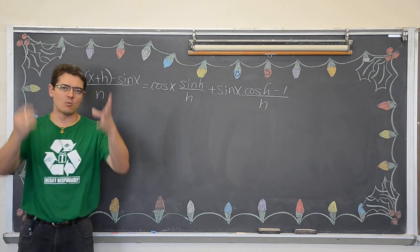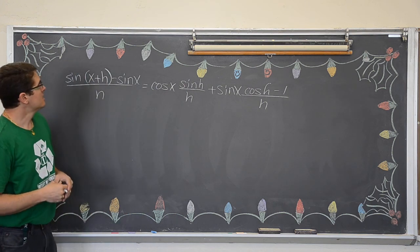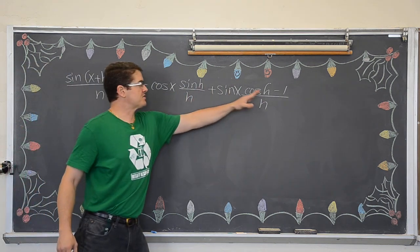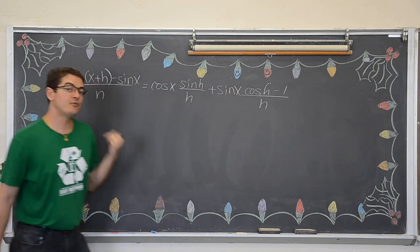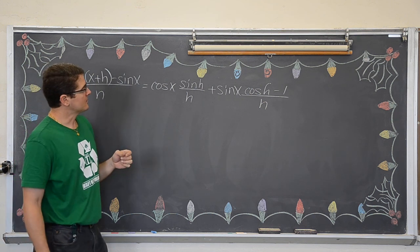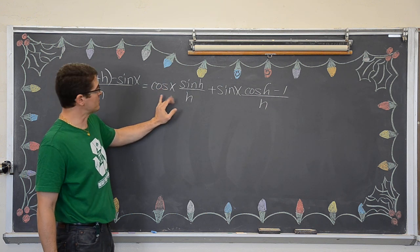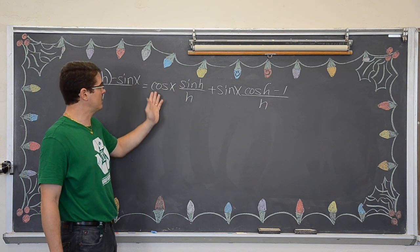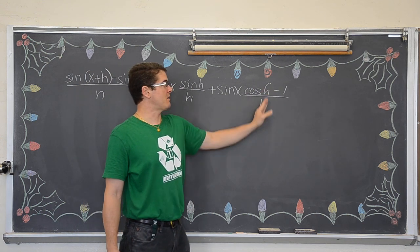Whenever you do a proof, remember you want to work your way down the tree — simplify, try to come down to that singular trunk. Both of these sides look kind of complicated. Over here we have two terms and over here we only have one. So I am going to try and put these two terms together and see if we can get it to match the left hand side. We are going to take cosine of x over one and multiply it to the first fraction. Now we have sine of x times cosine h minus 1, over h.